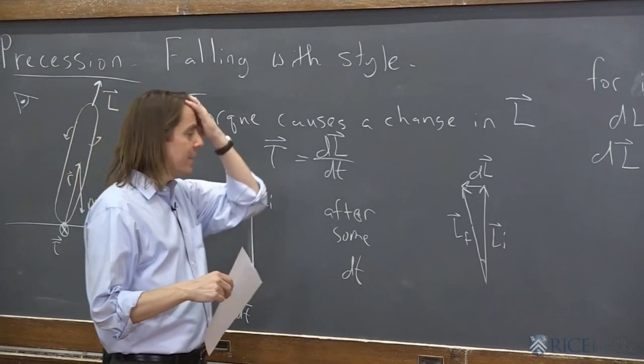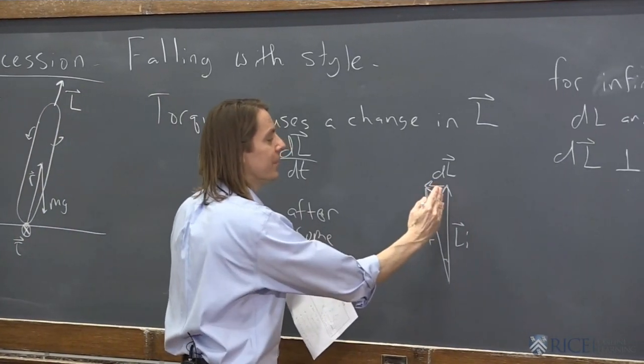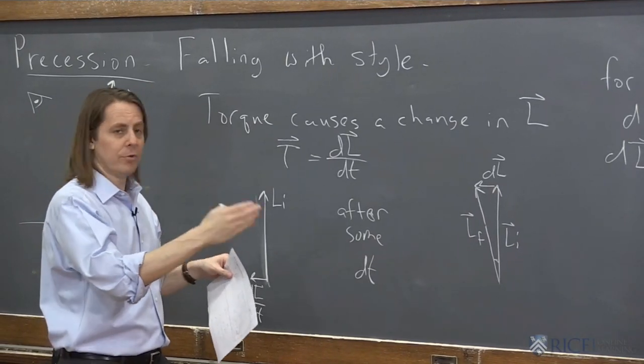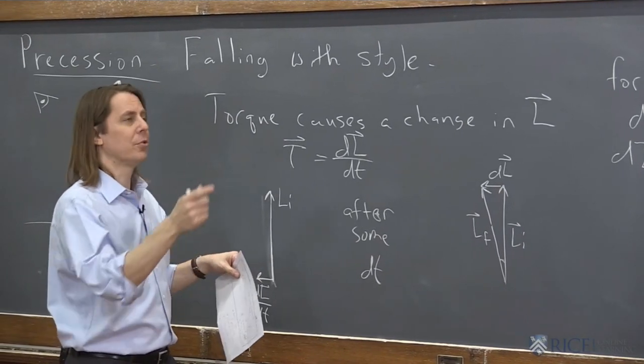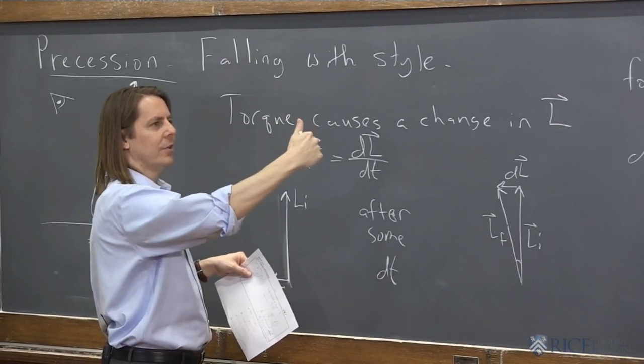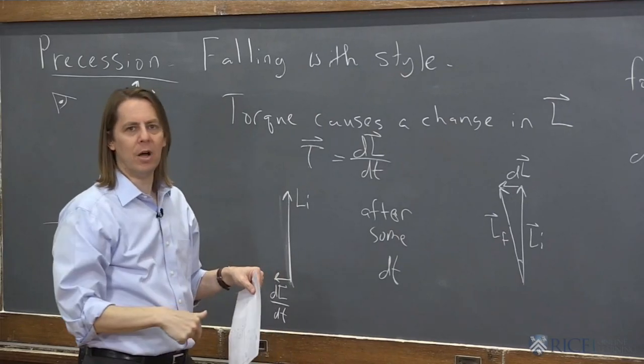So you have the case that the change of this L vector is always perpendicular to its direction. And that is a case that ends up with circular motion. That's the thing about circular motion, just a mass going on a circle. It has a velocity tangent to the circle, and its acceleration was always perpendicular to its velocity.